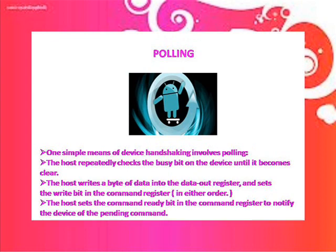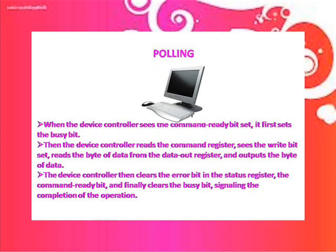Polling: one simple means of device handshaking involves polling. The host repeatedly checks the busy bit of the device until it becomes clear. The host writes a byte of data into the data-out register and sets the write bit in the command register. The host sets the command-ready bit in the command register to notify the device of the pending command. When the device controller sees the command-ready bit set, it first sets the busy bit, then reads the command register, sees the write bit set, reads the byte of data from the data-out register, and outputs the byte of data. The device controller then clears the error bit in the status register, the command-ready bit, and finally clears the busy bit, signaling the completion of the operation.